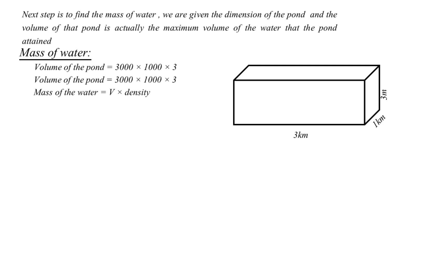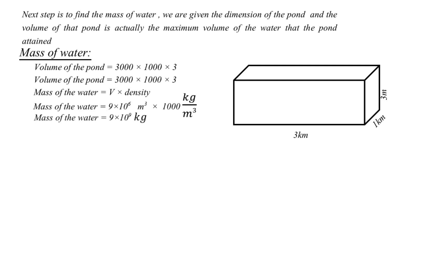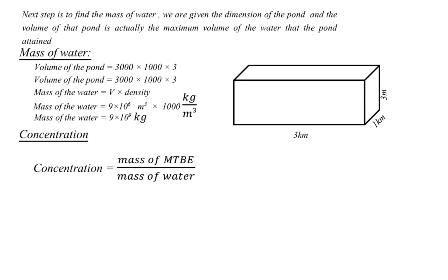Now we find the mass of the water so we can calculate the concentration. Using the relation density = mass / volume, and knowing the density of water is 1000 kg/m³, the m³ units cancel and we get mass = 9 × 10⁹ kg. Converting to grams, the mass of the water is 9 × 10¹² grams.